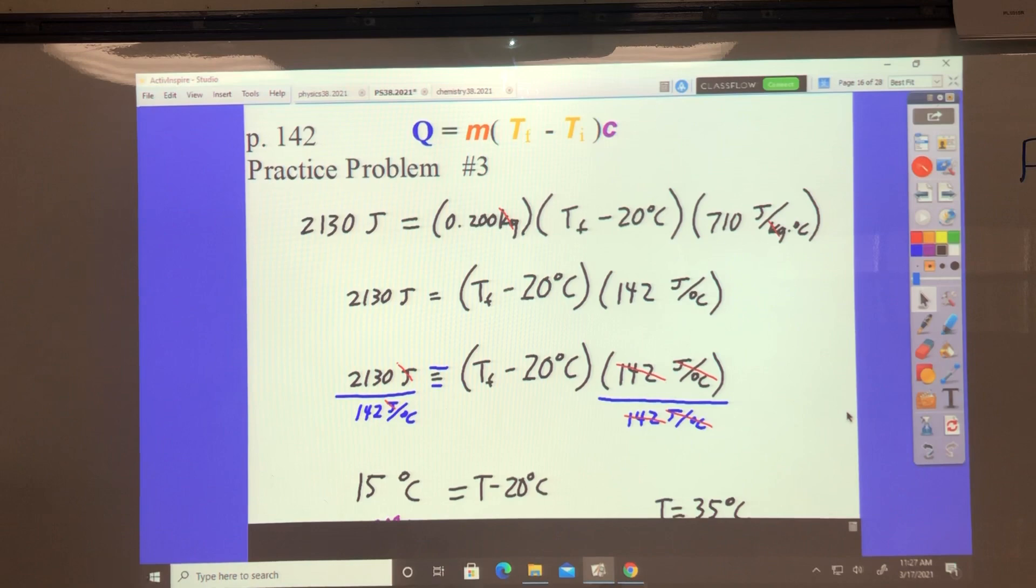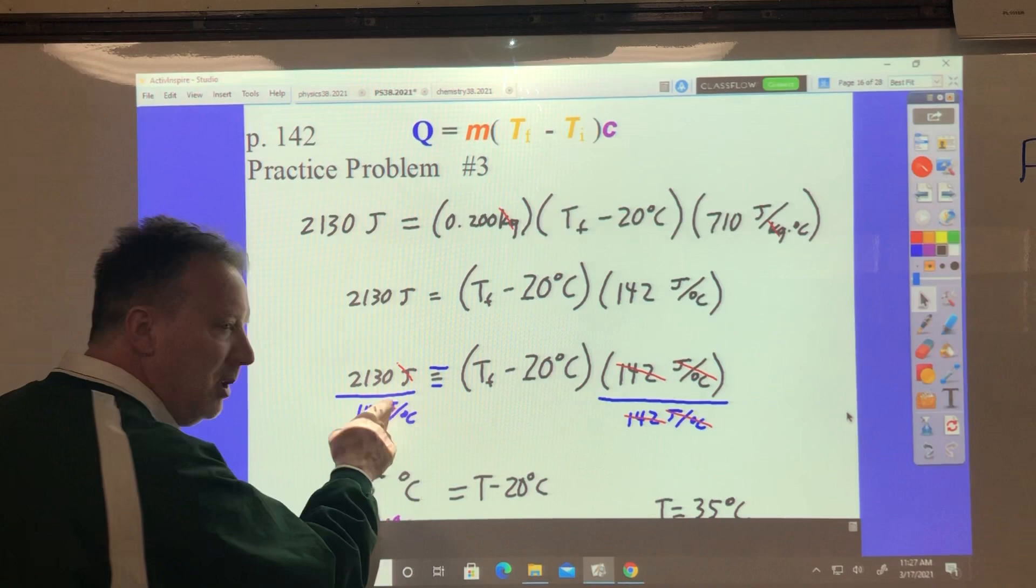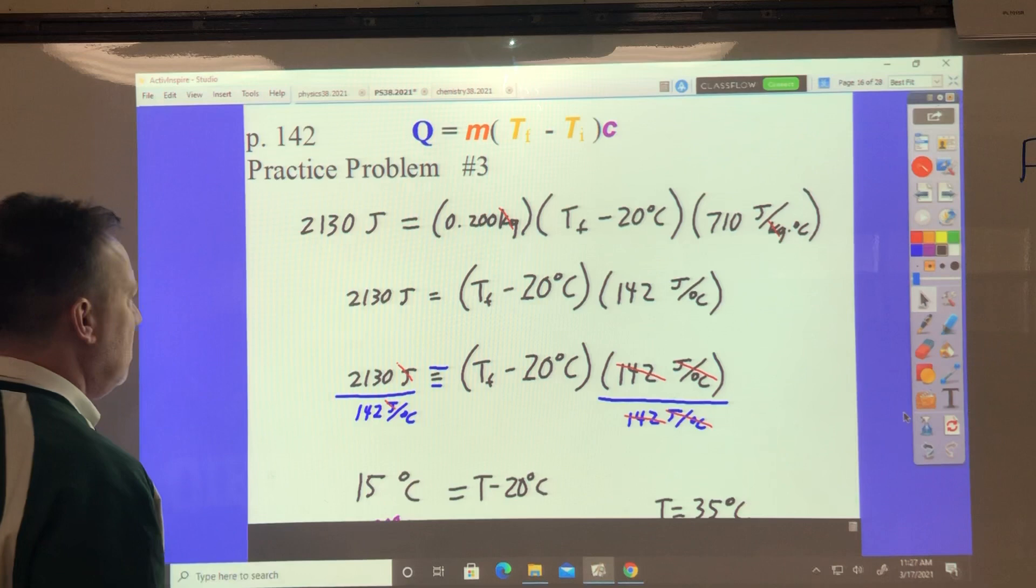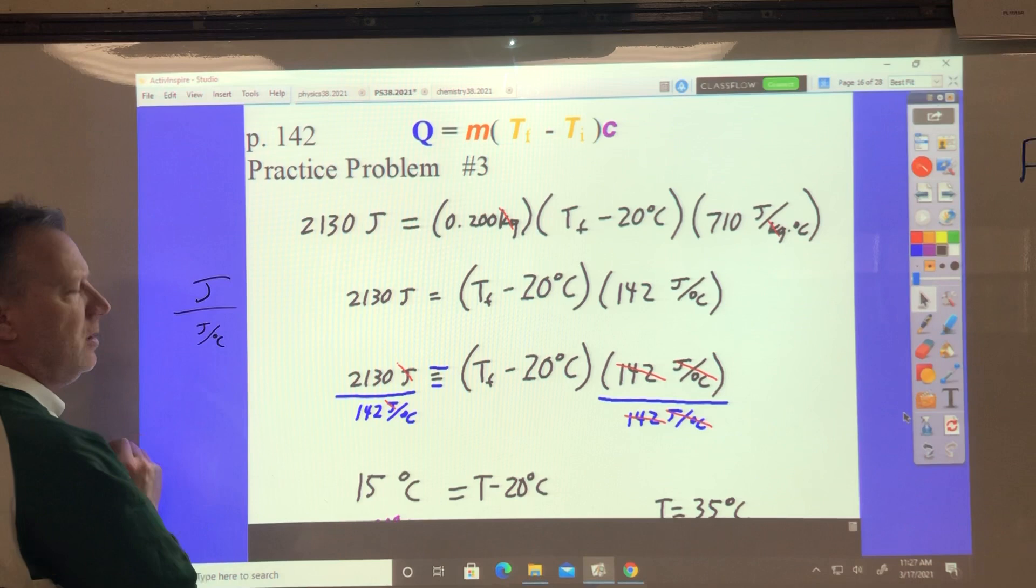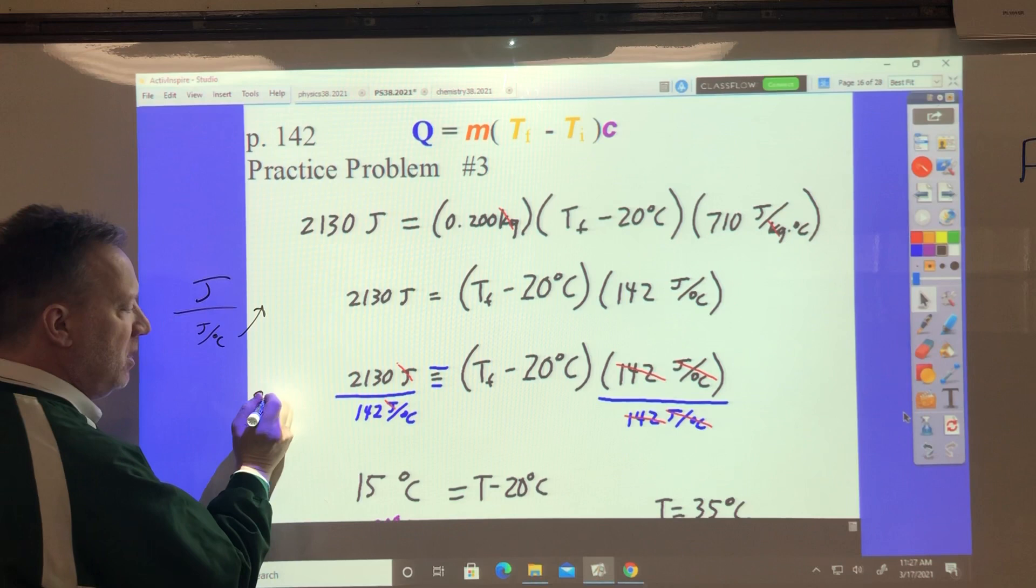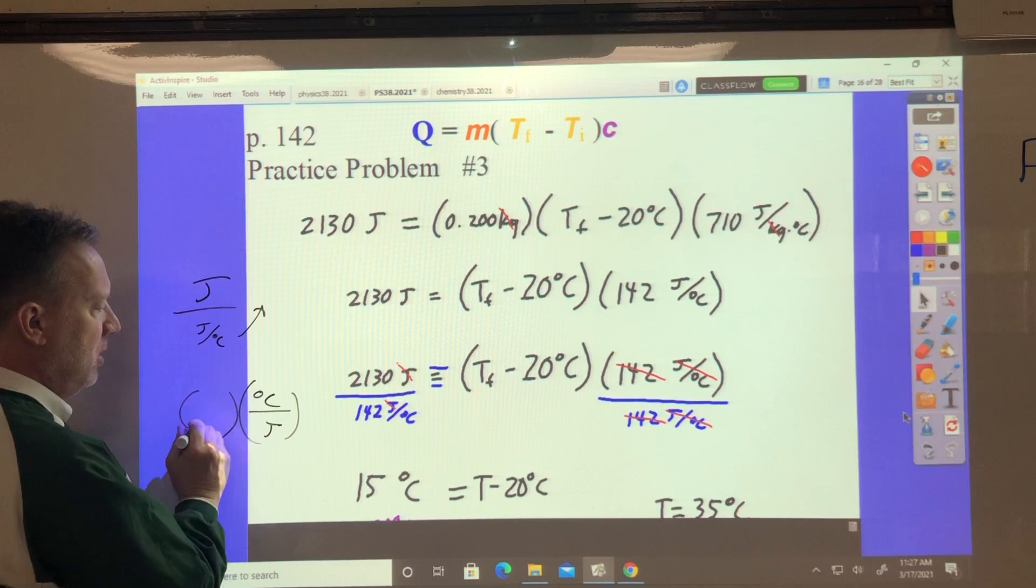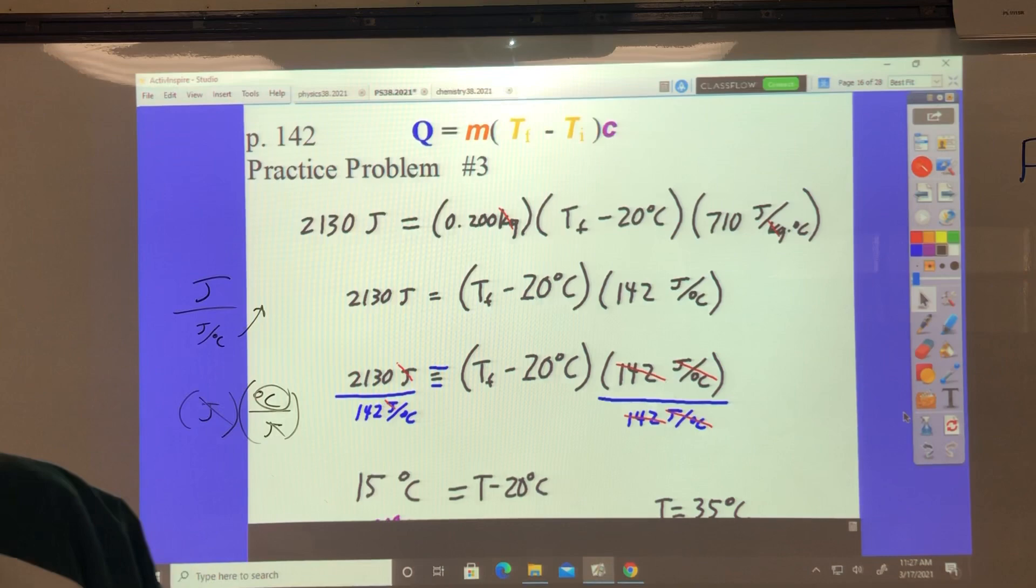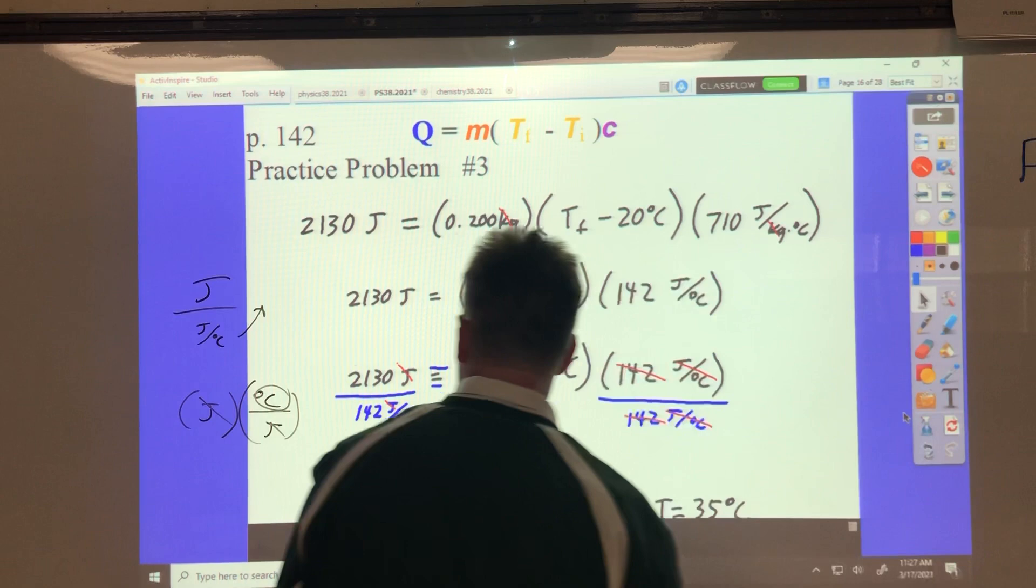Okay. It comes out to 15 degrees Celsius is T minus 20. Now you're pretty hold free. Look at what happens to the unit. We talked about this many times. If you have a joules over a joules over degrees Celsius, how do you get rid of that? Well, you bring this up here, and what do you do? You flip it. So it becomes degrees Celsius over joules. You've got to flip that. Times joules. And then this cancels, and ta-da! You're left with degrees Celsius, which is the right unit.